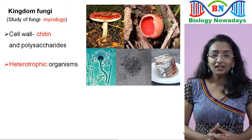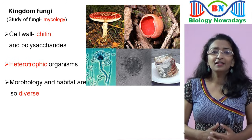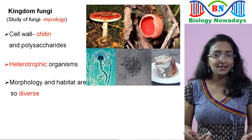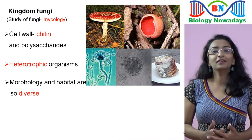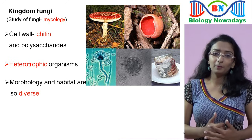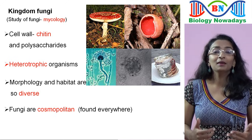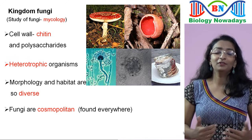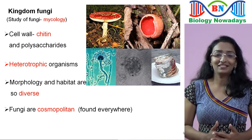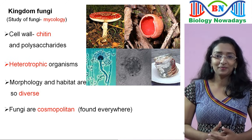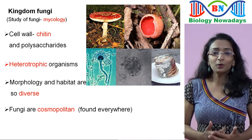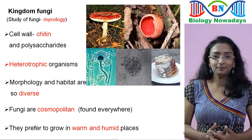Their morphology — that is, their form and structure — and also their habitat are very diverse. They are cosmopolitan, meaning they can be found everywhere, even in the freezing climate of Antarctica. But still, they prefer to grow in warm and humid places.